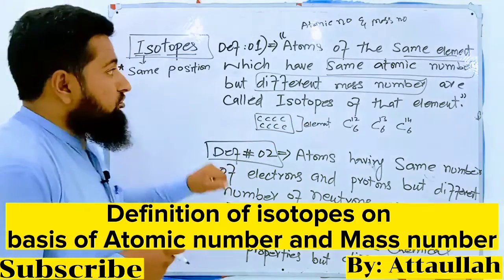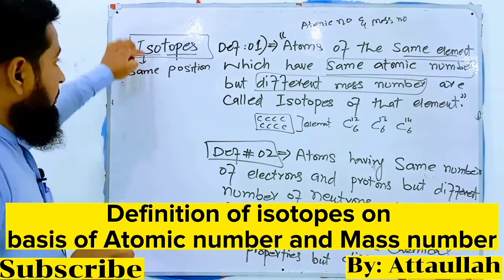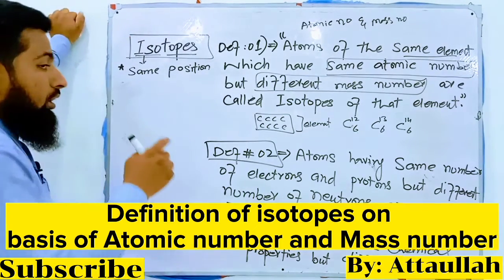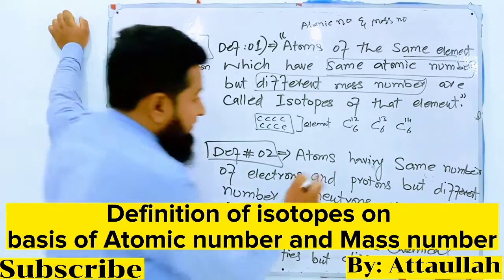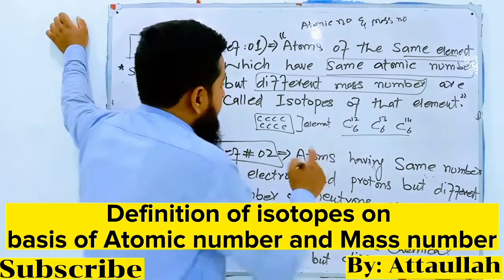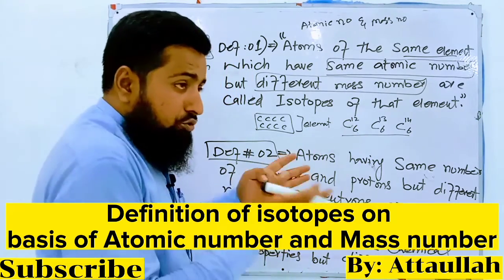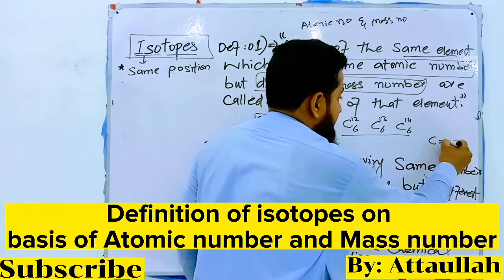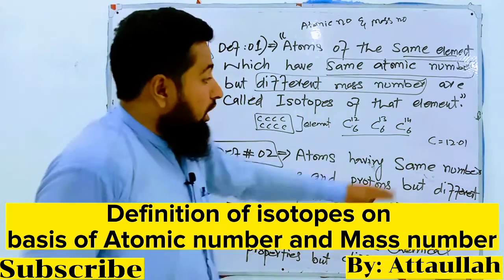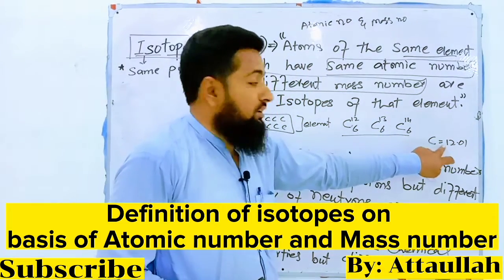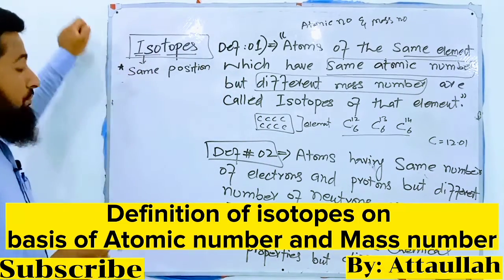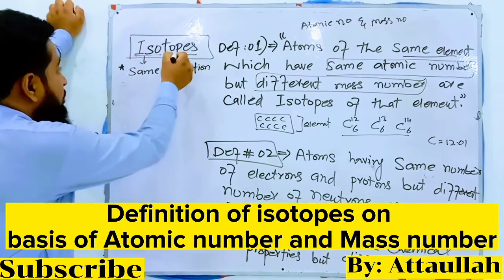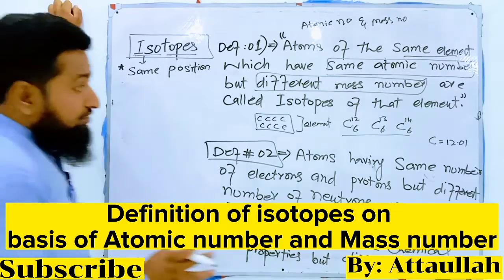Isotopes have the same average atomic mass in the periodic table — for example, carbon's atomic mass is 12.01. The average atomic mass is the same, and isotopes occupy the same position in the periodic table.